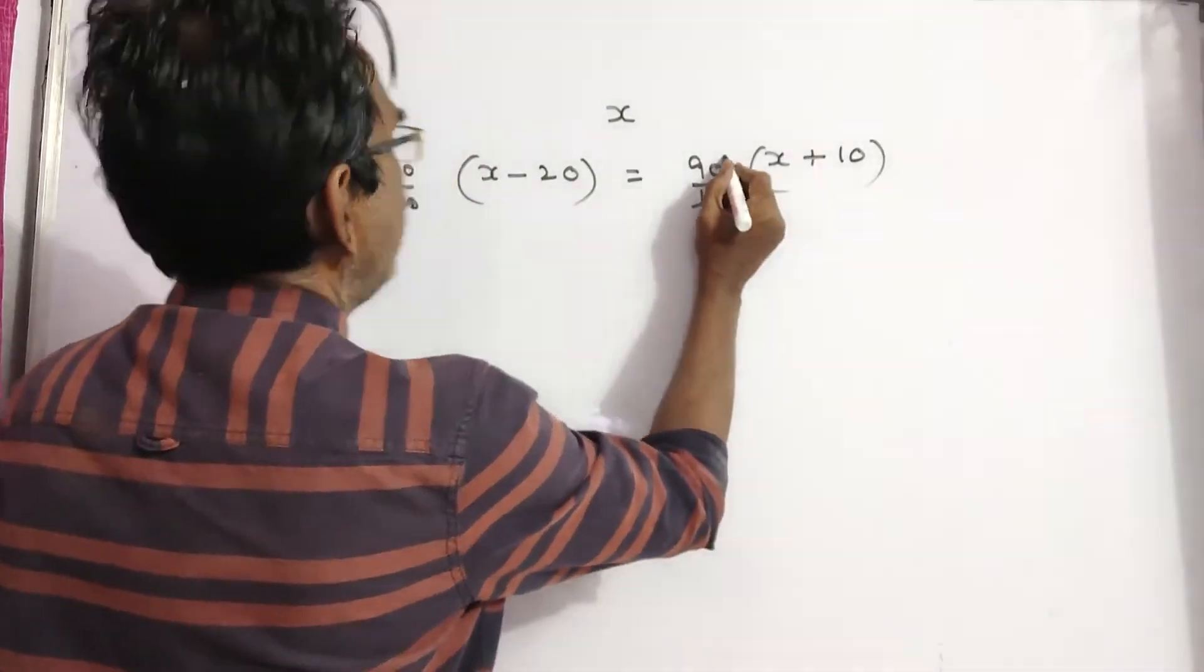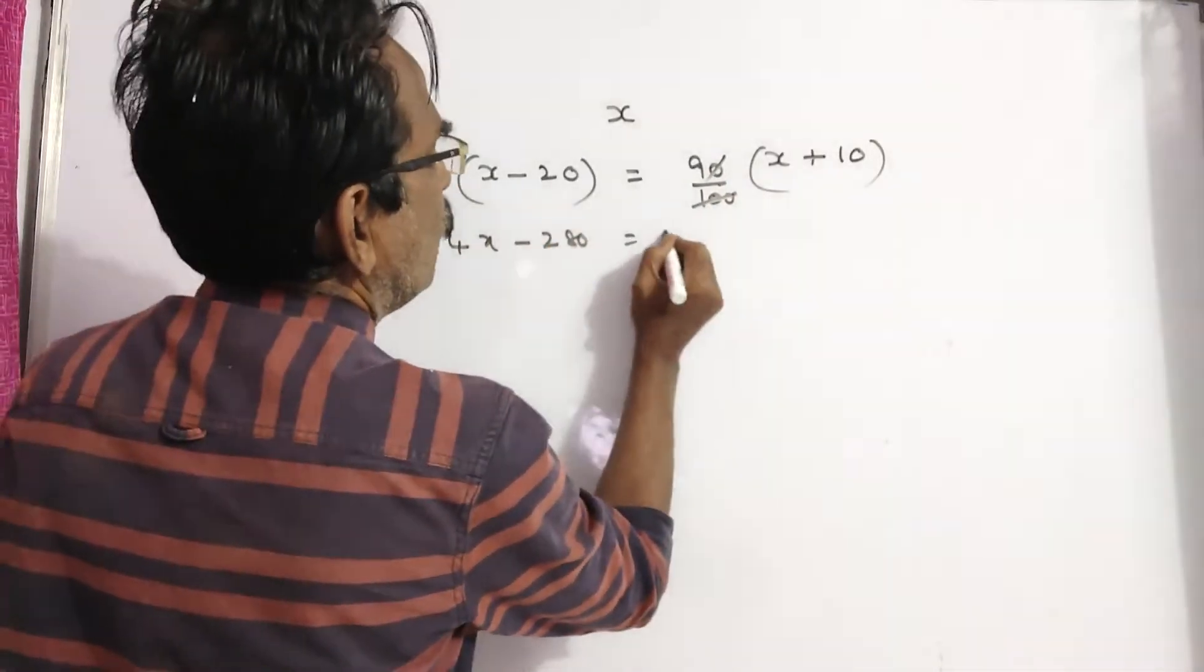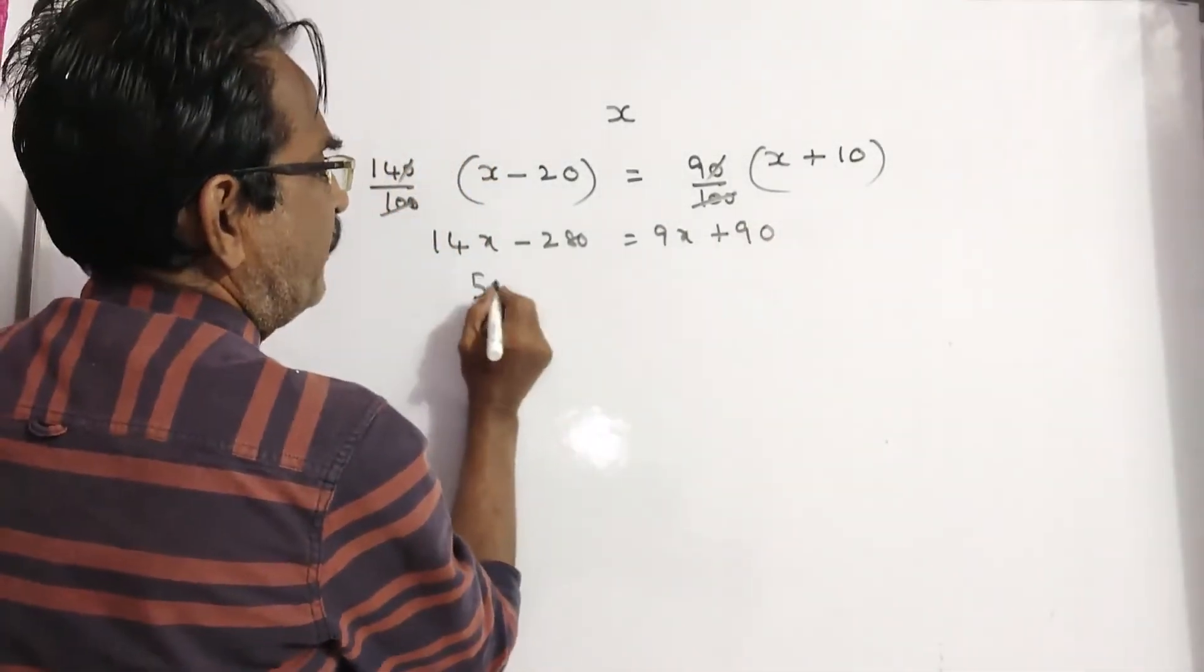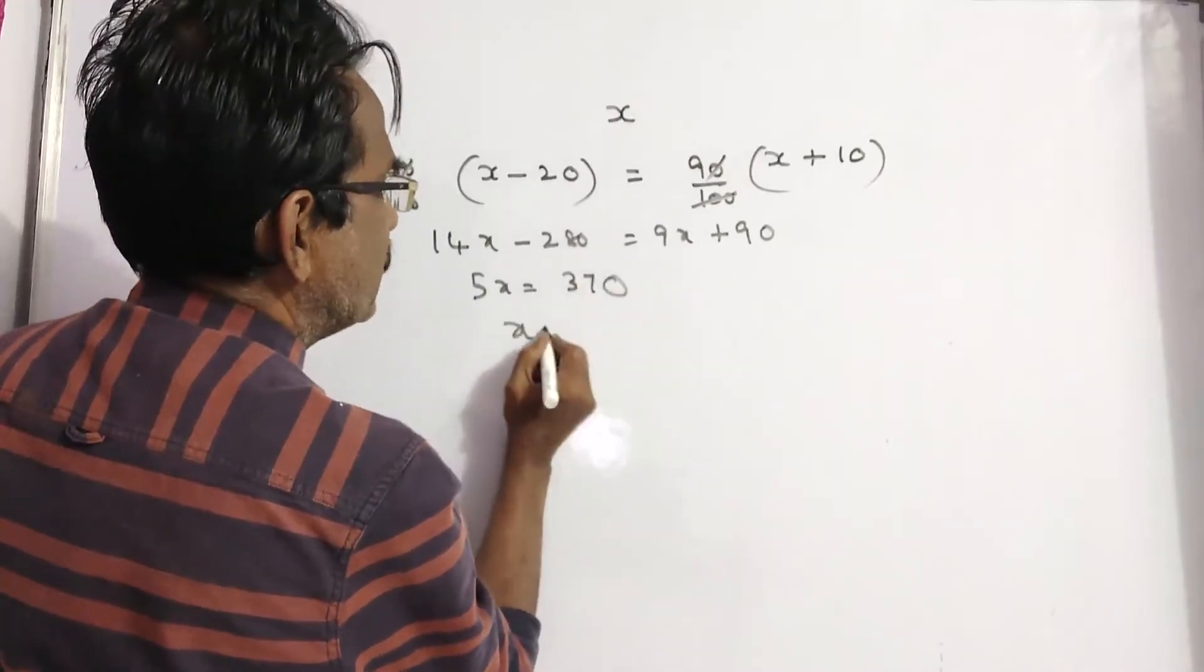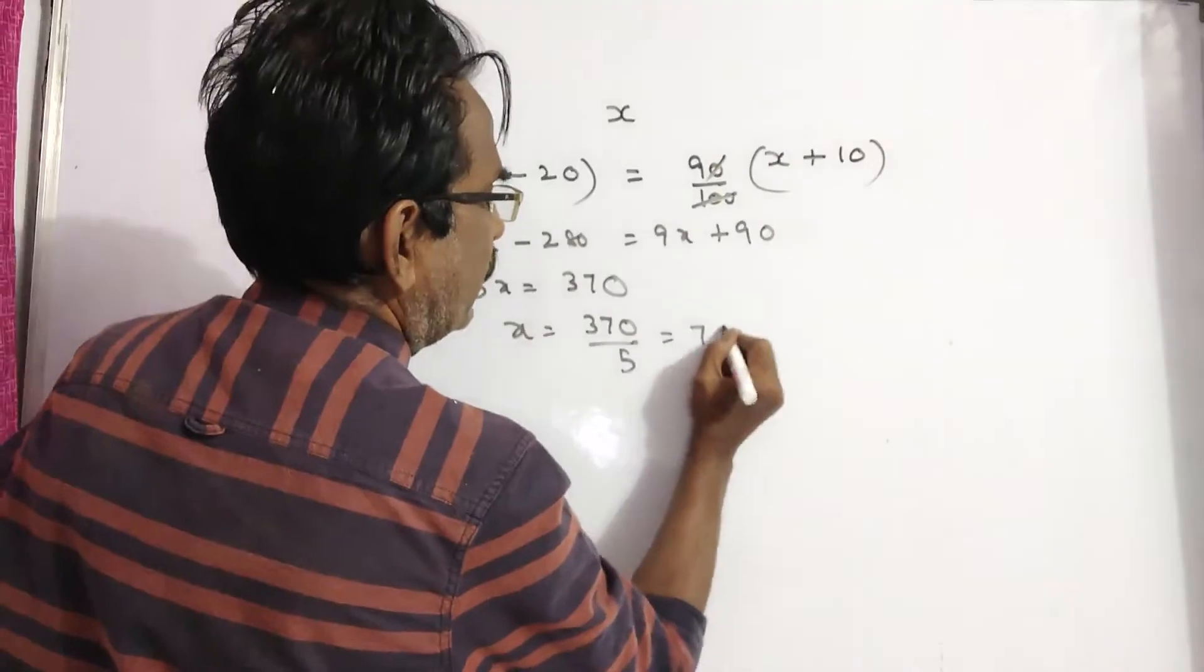So now let us find x. 14x minus 280 is equal to 9x plus 90. 5x is equal to 370. x is equal to 370 by 5, which is 74.